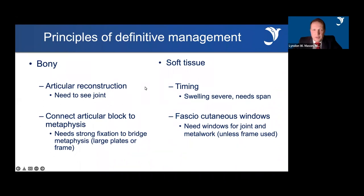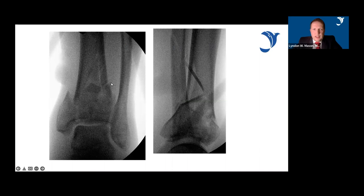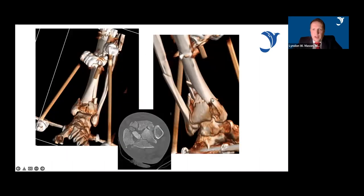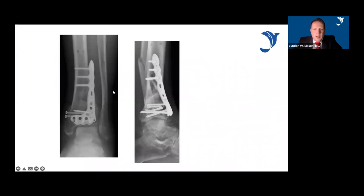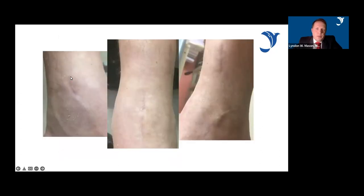For cases with metaphyseal loss, we are talking about frames and bridge plates. You need to see the joint, address any die-punch fragments, connect the articular block to the metaphysis with strong fixation bridging to the diaphysis, and the soft tissue situation means you definitely need time for swelling to settle. Fasciocutaneous windows are needed for both the joint and metalwork. In one case showing significant comminution around the articular surface — a closed injury with considerable metaphyseal comminution — the fibula was not plated initially due to soft tissue concerns. The construct was plated anteriorly with a window to allow die-punch reduction and fixation. The post-operative scars at six months were excellent; the patient is now five years out and did not require any further surgery.